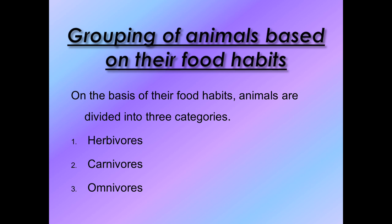Starting with the topic: Grouping of Animals Based on Their Food Habits. This topic heading is about grouping animals - but on what basis? If you want to group, there must be one condition. For example, in your class, if two groups are made - one group of girls, one group of boys - the condition is gender. In school, grouping is done age-wise or standard-wise, like Standard 6th, 7th, 8th each forming one group.